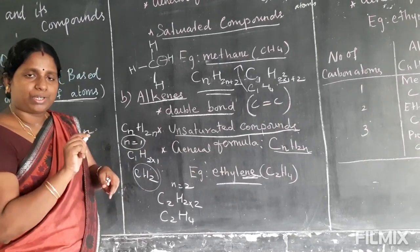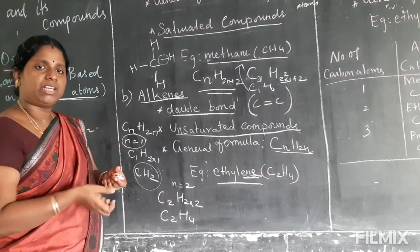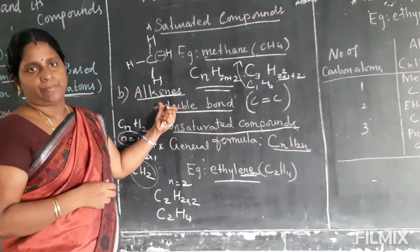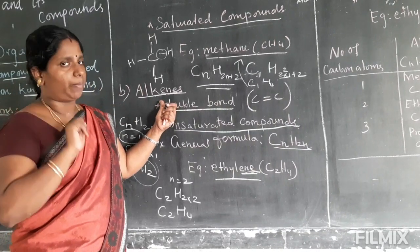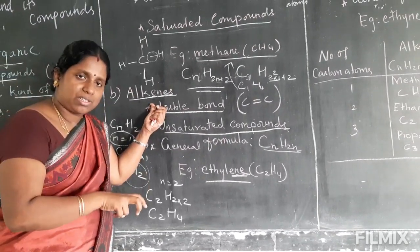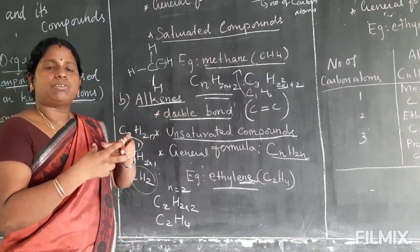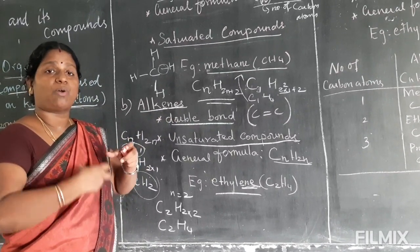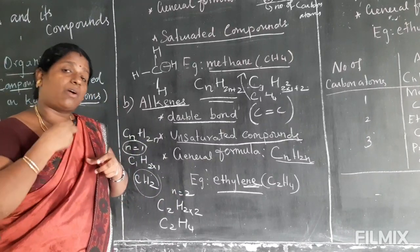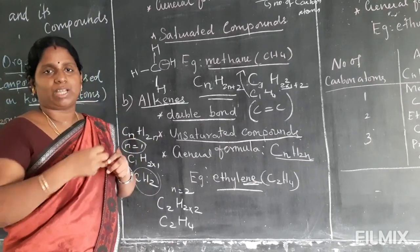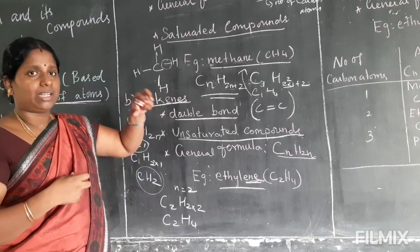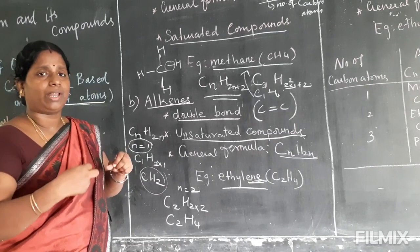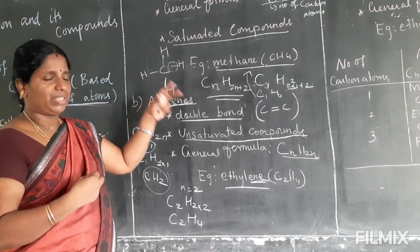The suffix 'ene' in the product name indicates it comes from alkenes. So we get ethylene, propylene, butylene and so on. Products with the 'ene' ending are unsaturated compounds from alkenes. You need to understand how each organic compound relates to the general formula and how to name each compound.